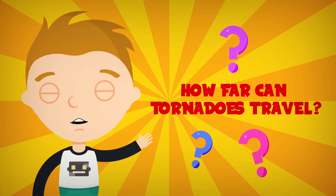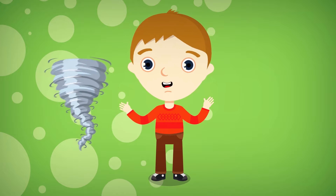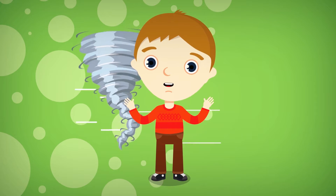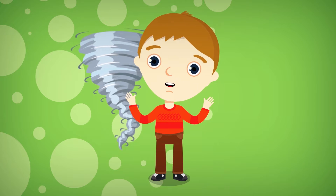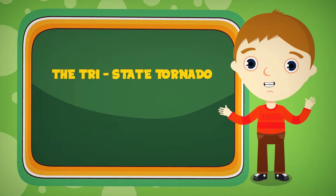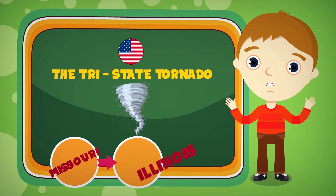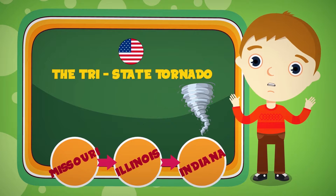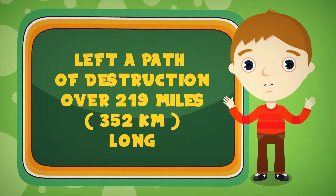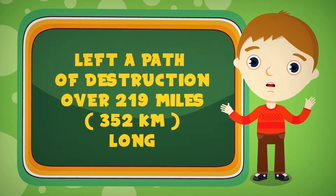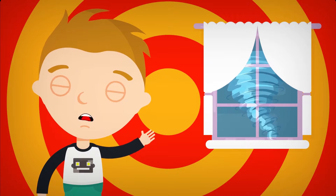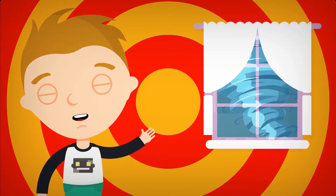How far can tornadoes travel? Most tornadoes travel a few miles, but extreme tornadoes can travel much further — sometimes over 100 miles or 161 kilometers. The tri-state tornado that traveled through parts of Missouri, Illinois, and Indiana in 1925 left a path of destruction over 219 miles or 352 kilometers long. That is a massive distance.